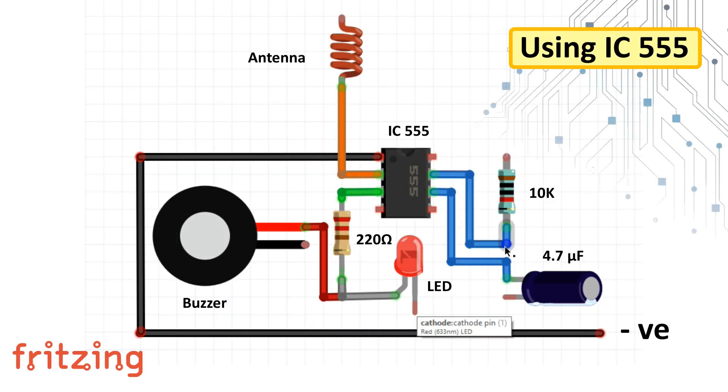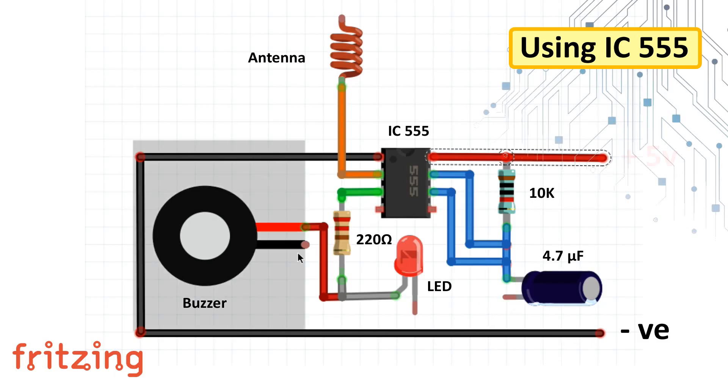Then pin 6 or the threshold pin and pin 7 or the discharge pin need to be connected to each other. Pin number 8 and the other end of the 10k resistor connects to the positive rail of the circuit board. And finally connect all the negative legs to the negative rail of the circuit board.